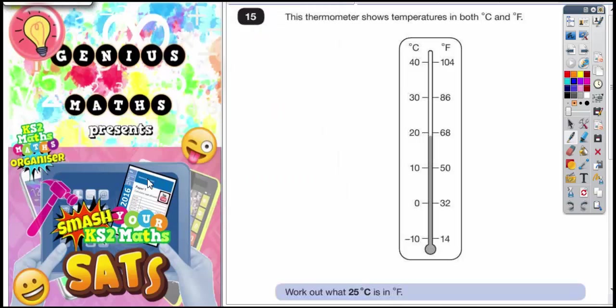Question number 15. This thermometer shows temperatures in both degrees C and degrees F. Degrees C stands for Celsius or centigrade and degrees F stands for Fahrenheit. It's just two different scales for measuring temperature.